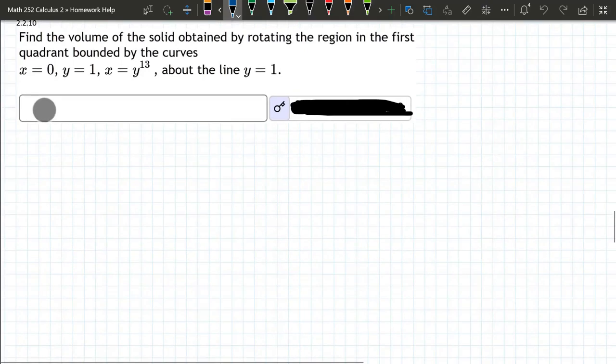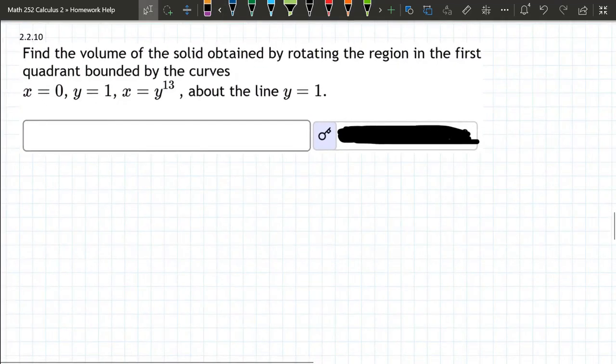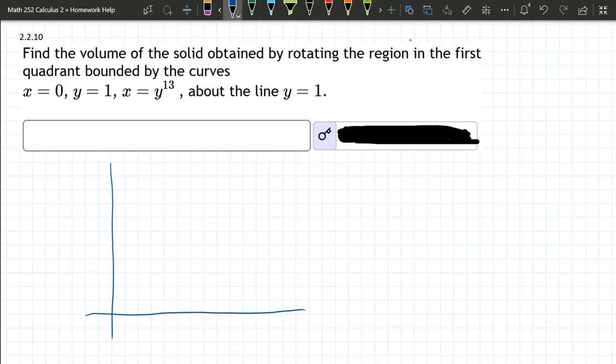Let's go ahead and graph this region first. X equals 0, Y equals 1. Those are easy to graph. So X equals 0 is the Y axis and Y equals 1. We'll say that's 1 right there. Y equals 1 is a horizontal line.